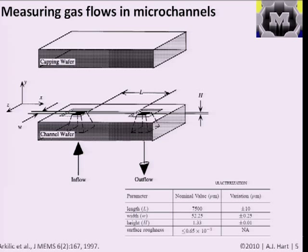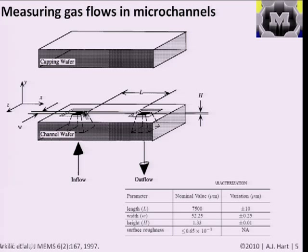They bonded two silicon wafers together, etching cavities in the bottom channel wafer. Flow enters from the bottom through a cavity from the back, travels down a long channel, and exits on the right side. They needed good control over fabrication and made long, very shallow channels. The length was important to study compressibility effects—they wanted a large pressure drop with sufficient flow. To be in the slip regime, they made the channels fairly shallow: their nominal channel height was about 1.33 microns with very little variation, ensuring uniform etching.